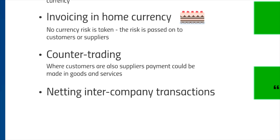Counter trading is where you barter — you trade products instead of currency. Carol could say to the oven manufacturer: you sell me an oven, I'll bake a thousand cakes for you. However, it requires both the supplier and the customer to actually need each other's products, which is unlikely in most cases. The benefit is that there's no currency transaction at all. It's a less common technique and probably less likely to appear in an exam, since having suppliers and customers selling to each other in equal amounts is unusual.